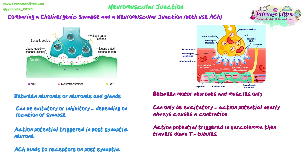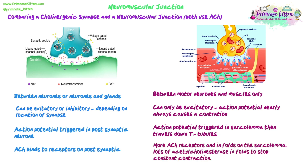In the cholinergic synapse, acetylcholine binds to receptors on the post-synaptic membrane. The neuromuscular junction has more acetylcholine receptors than a normal synapse, and they are in folds in the sarcolemma, whereas there are no folds in a normal synaptic crossing. There is also a lot more acetylcholinesterase in those folds in order to stop constant contraction from happening.